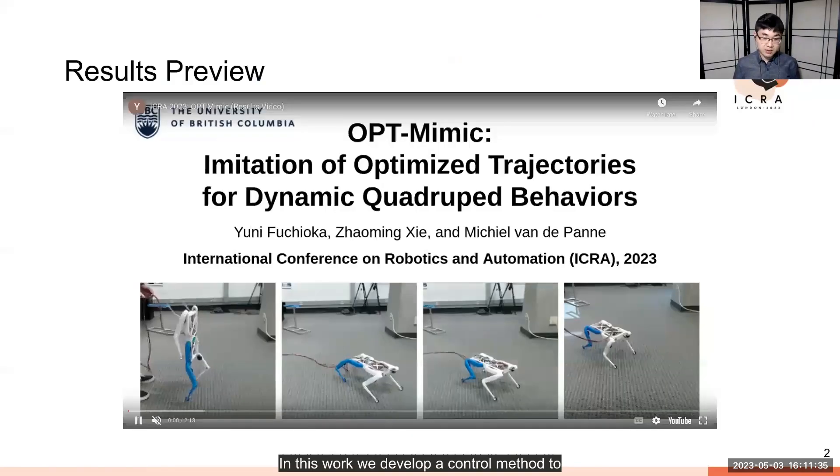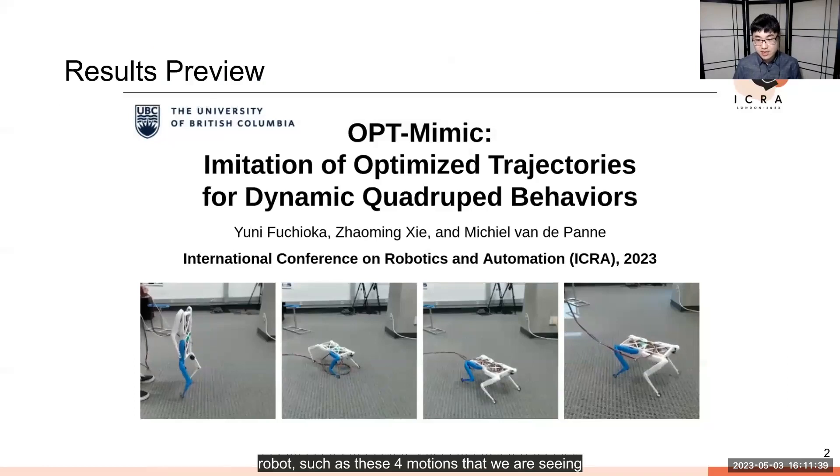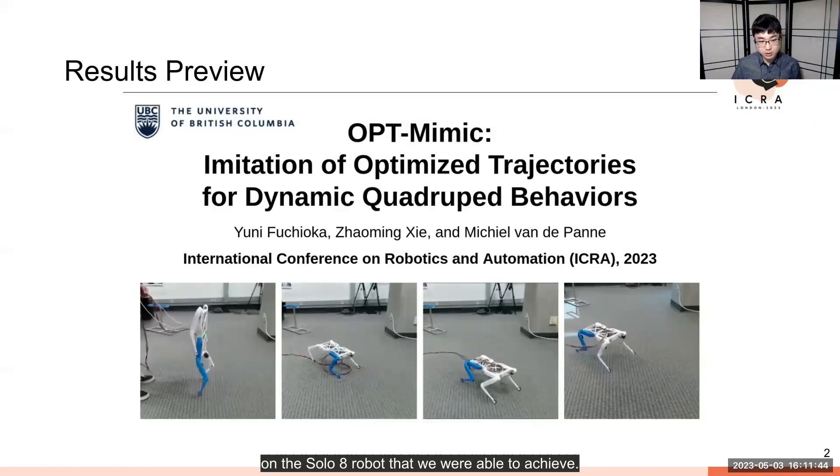In this work, we developed a control method to enable dynamic and agile motions for a quadruped robot, such as these four motions on the Solo8 robot that we were able to achieve.